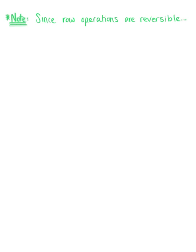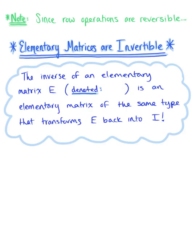Since row operations are reversible, as we learned at the beginning of this course, this lets us know that elementary matrices are also invertible. Each elementary matrix E is invertible, and the inverse of this elementary matrix E, which we denote as E to the minus one, is an elementary matrix of the same type that transforms E back into the identity matrix.